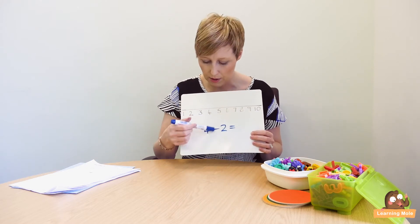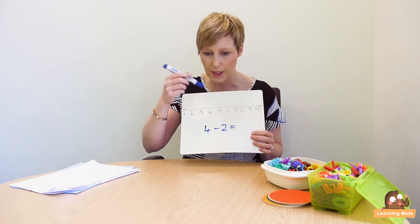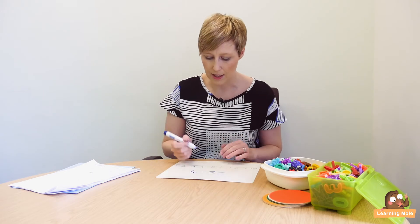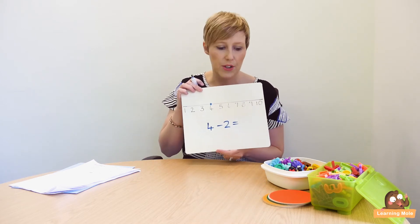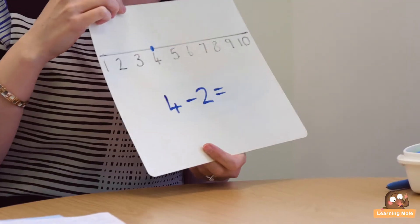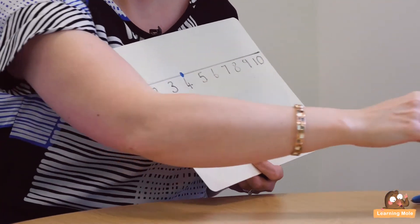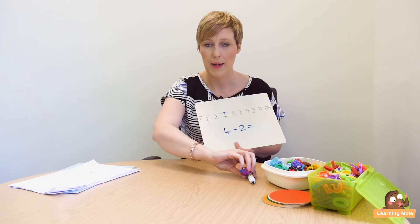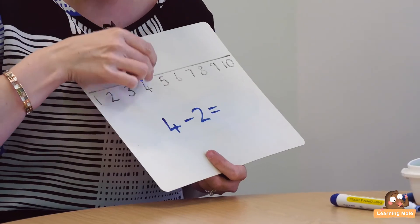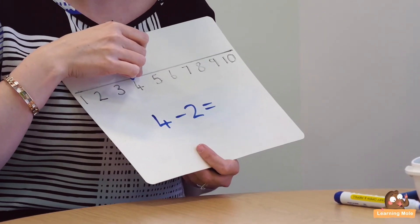We're going to start with the number four. We go to four and I would actually encourage them to draw a dot and have a little frog or something and put it on there. You might even just want to use a little figure, so you might not even want to use a pen to jump—you might actually want to put your little figure on there.